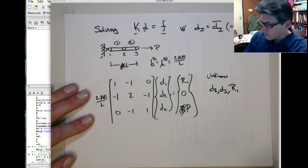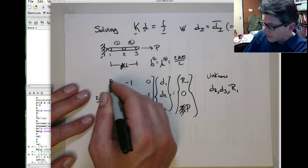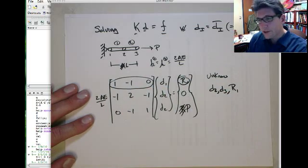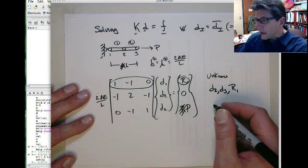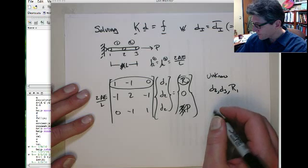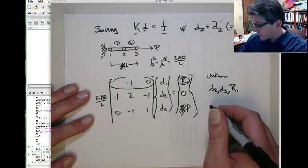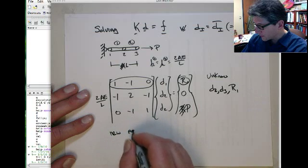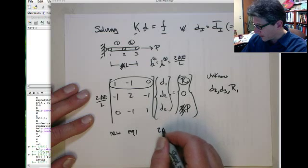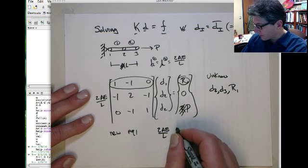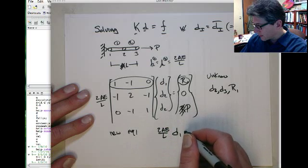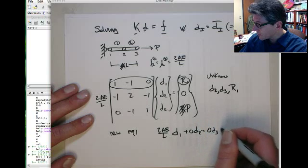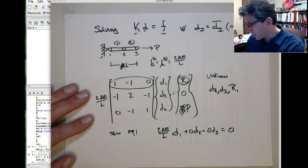So we talked about this in class, so just real quickly, we're going to remove the first equation and instead use a new equation 1, and it's going to be 2AE on L times D1 plus 0 times D2 plus 0 times D3 equals 0.